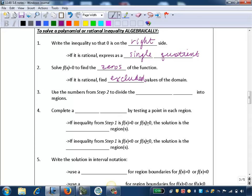Step 3: Use the numbers from Step 2 to divide the number line into regions. So we're going to sketch a number line and divide it into regions based on the zeros and the excluded values.